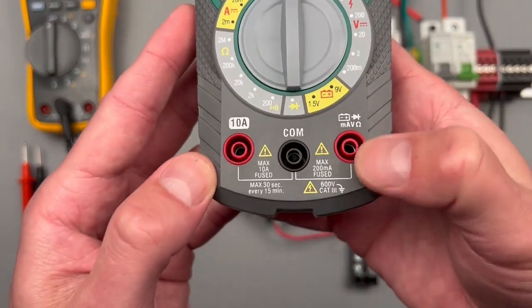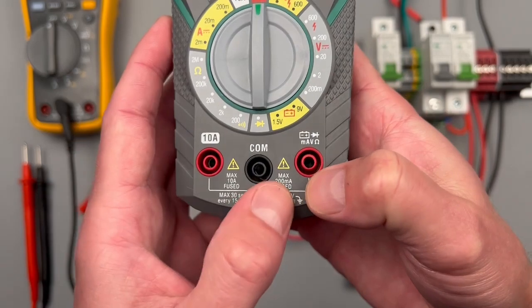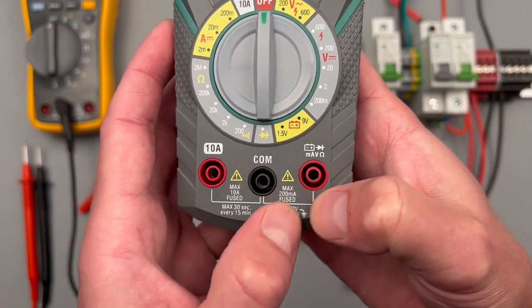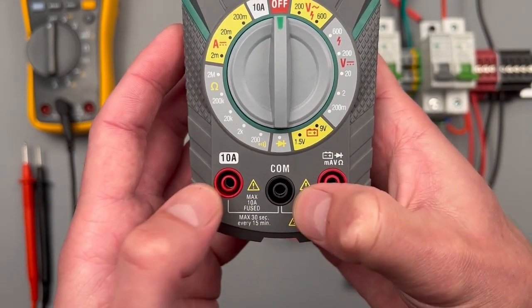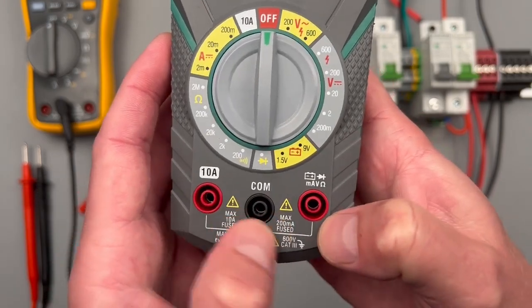On this meter here, I can do 200 milliamps of direct current using this port, but if I do anything more than that, I'm going to need to be utilizing this port. And that's what it's trying to signify to you right there.